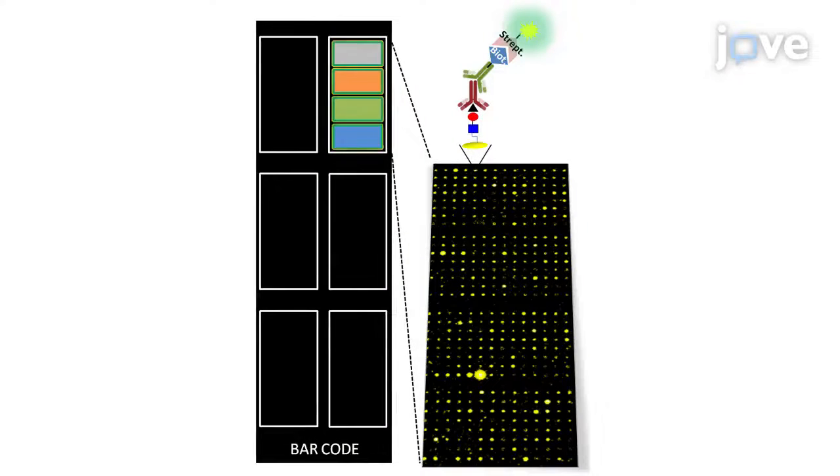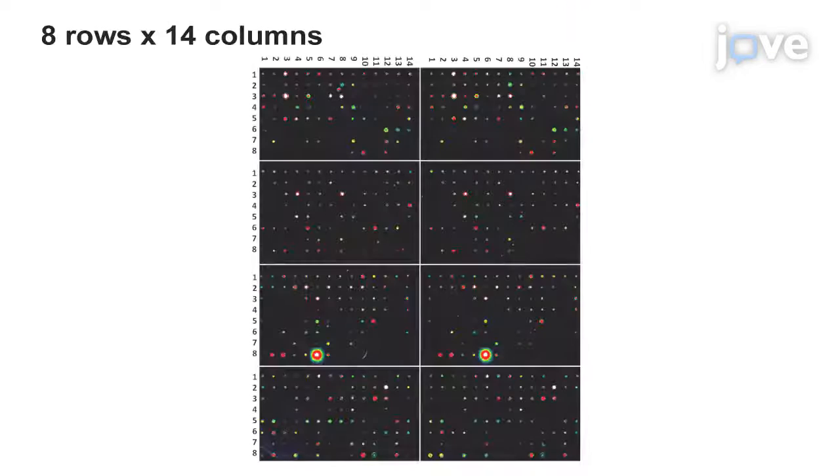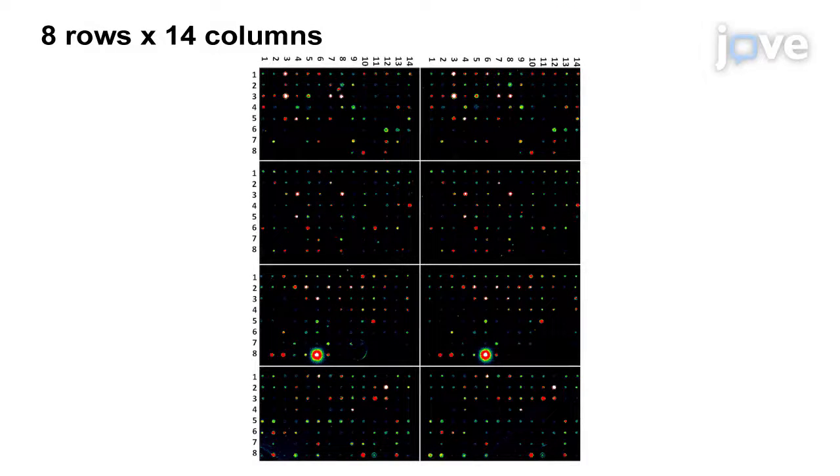Each slide contains four different blocks of subarrays, repeated six times. Every single subarray is formed by 112 different glycan spots, including controls.